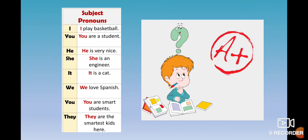We call it a subjective pronoun because it goes at the beginning of the sentence and has the function of a subject. Se le llama pronombre subjetivo porque va al inicio de la oración y tiene la función de sujeto. For example, 'I' is the subject in the first sentence, and 'play basketball' is the predicate. A sentence has two parts: the subject and the predicate. When we have a subjective pronoun, it is the subject in the sentence — that is why we call them subjective pronouns.